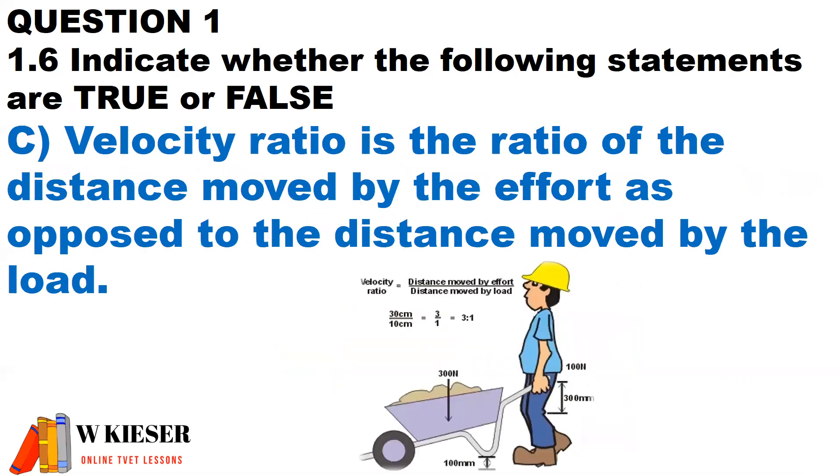In part C, velocity ratio is the ratio of the distance moved by the effort as opposed to the distance moved by the load. And that is true.